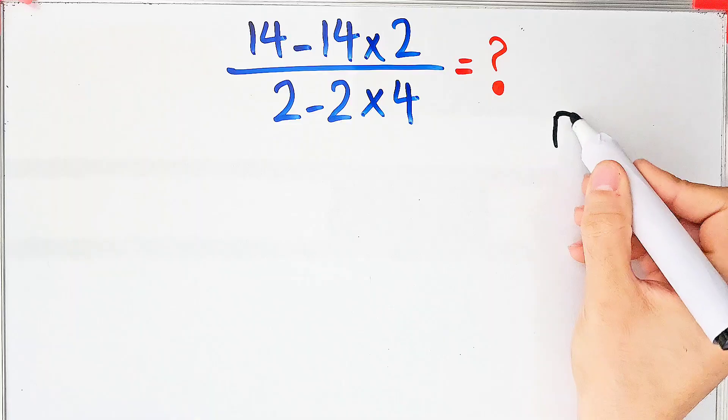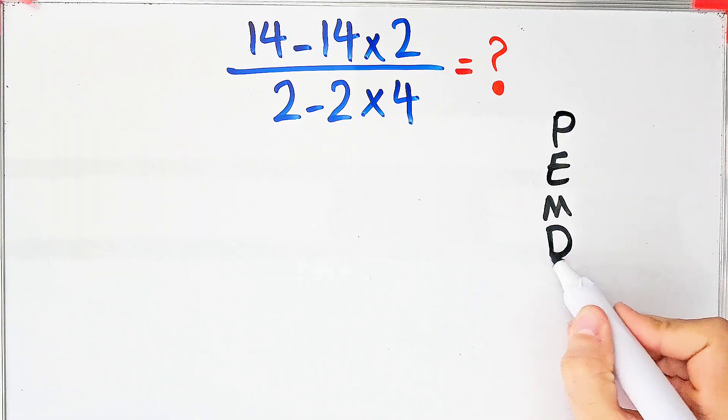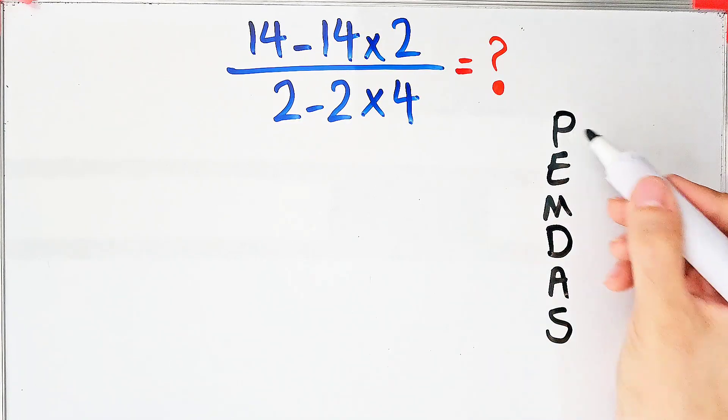We need to follow the order of operations, which is PEMDAS. PEMDAS shows the priority of the mathematical operations, and if you don't pay attention to this rule, you get the wrong answer.